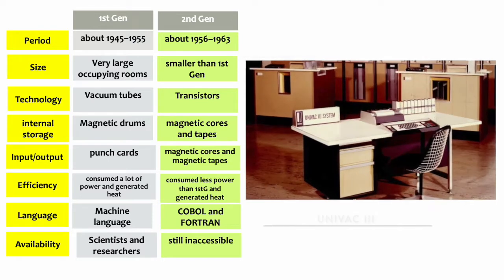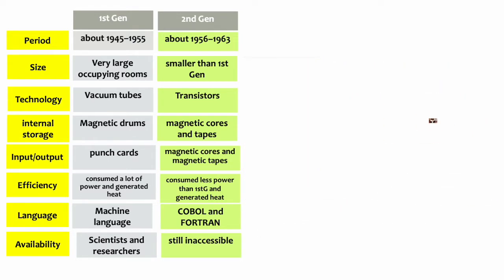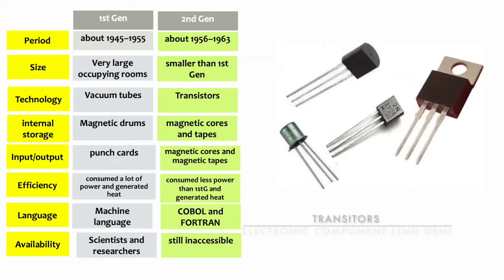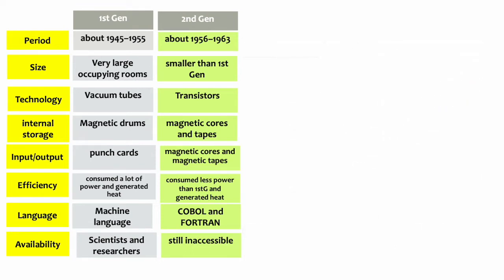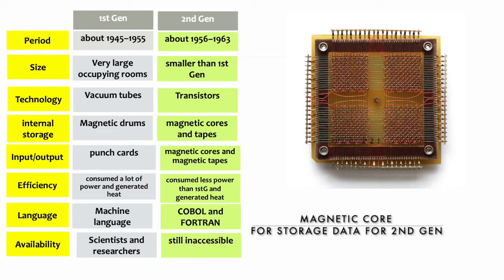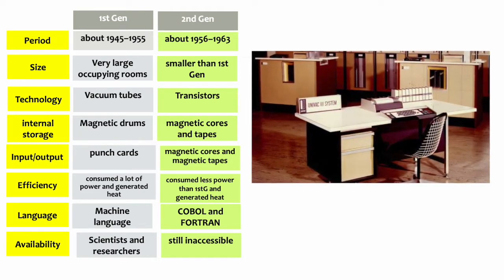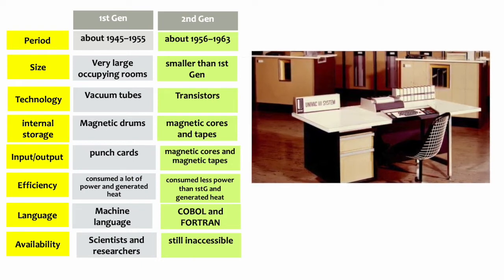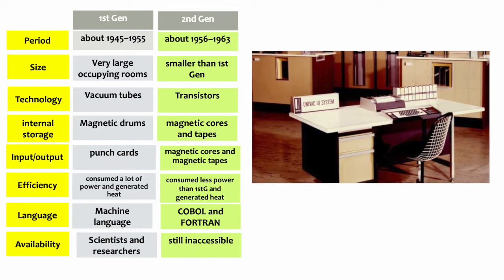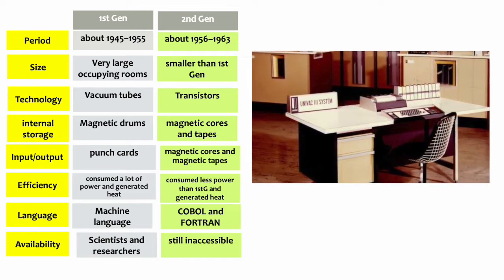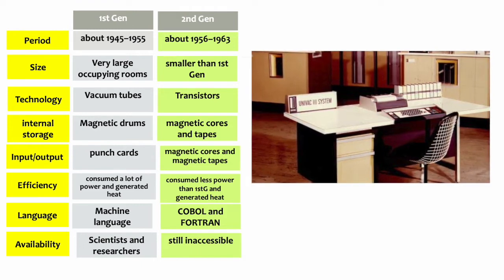The second generation computers were smaller in size than the first generation computers. They used transistors as the main electronic components. Transistors consumed less power than the first generation computers and were more reliable than vacuum tubes. Second generation computers still generated a lot of heat and required frequent maintenance. They used magnetic cores and magnetic tapes for inputting and storing data. High-level programming languages such as COBOL and FORTRAN were introduced during this period. Second generation computers were still inaccessible to most people. Examples include UNIVAC 3 and IBM 1401.